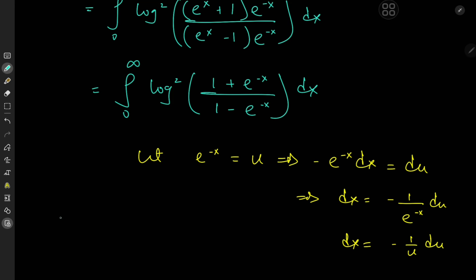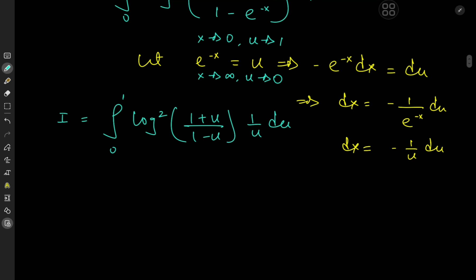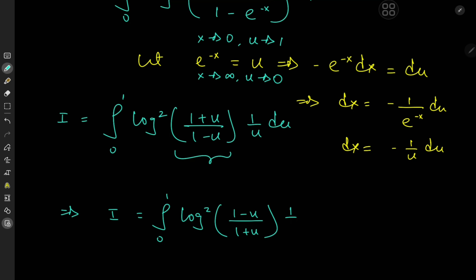Returning to our integral, as x approaches 0 we have u approaching 1, and as x approaches infinity we have u approaching 0. So we integrate from 1 to 0 with a negative sign from the differential. Switching limits and reciprocating the logarithm argument (the square removes the sign), we get i equal to the integral from 0 to 1 of log squared of (1-u)/(1+u) times 1/u du.